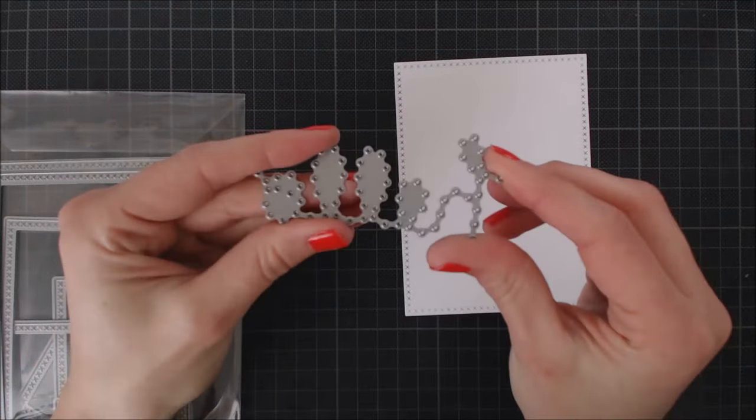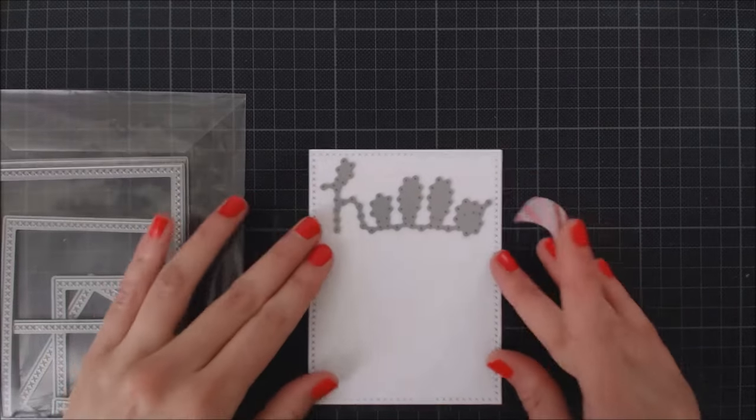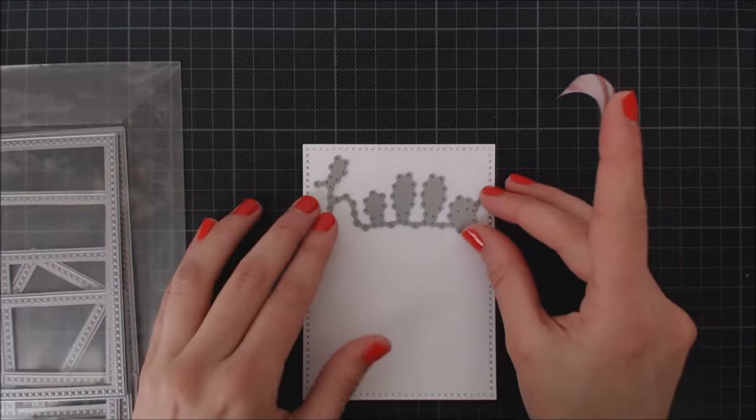To start off, I went ahead and die-cut a piece of cardstock using a cross stitch rectangle die.